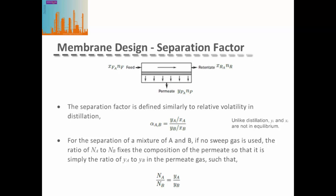One of the most important parameters in the design of membranes is the separation factor. The separation factor is defined similarly to the relative volatility in distillation: it's the permeate fraction of component A divided by the retentate fraction of component A, divided by that same ratio for component B. But unlike distillation, the mole fractions of Y and A are not in equilibrium — they're defined by their flow through the membrane.